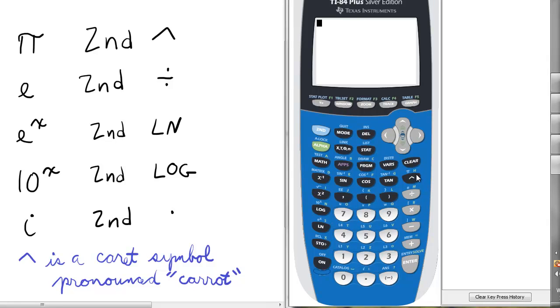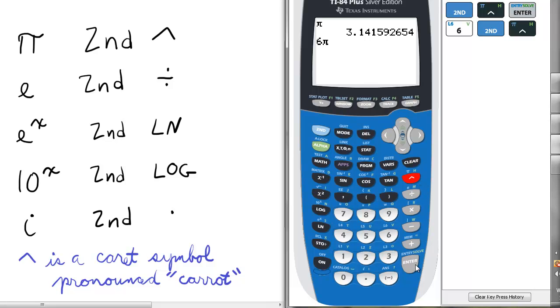First, there's the pi key, and we can access that by pressing second and the caret symbol, and enter. Let's say we had to find 6π. We press 6, second, caret for the pi symbol, enter. So 6π is approximately 18.85.